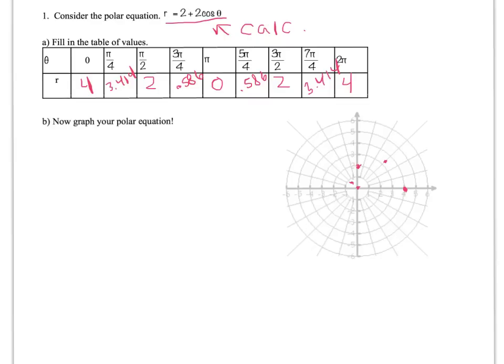When I rotate 5 pi over 4, 225 degrees, again, I walk out 0.586.